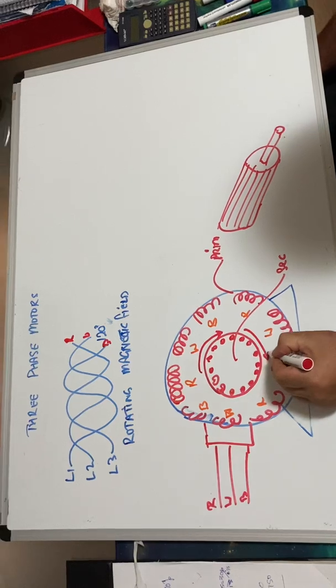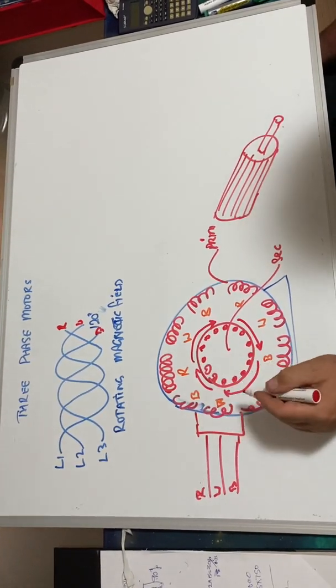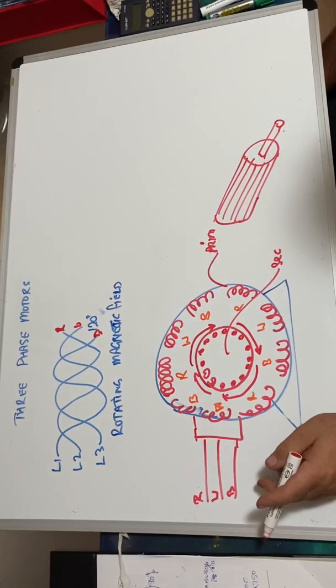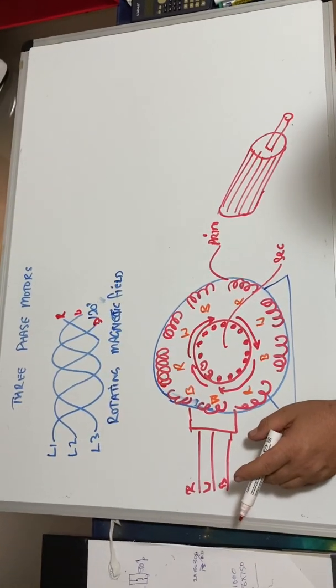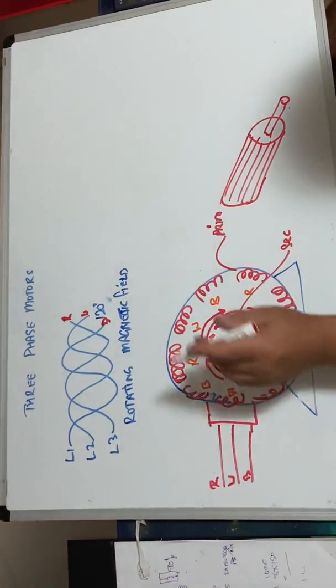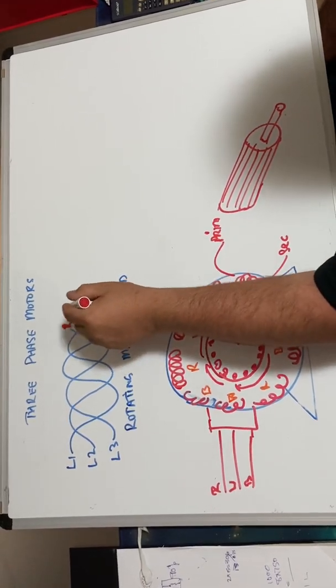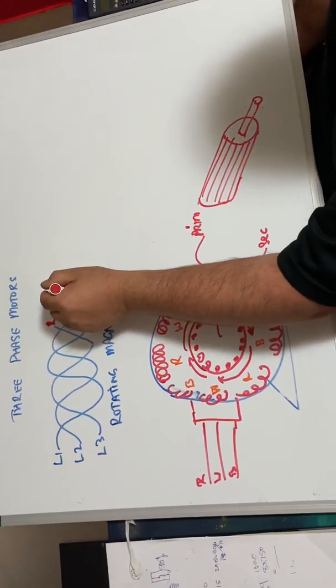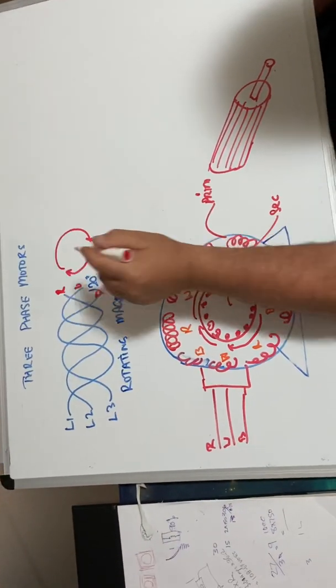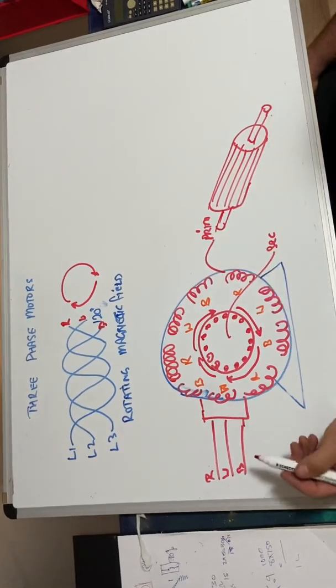As you can see, these red, white, and blue here, they're alternating at different times. We start to get a push and pull effect and this will start to rotate around. Even if I put a coke can or anything in there that can be induced, this will start to rotate. That's why we don't need anything to help start the three-phase motor because it has this rotating magnetic field 120 degrees apart.